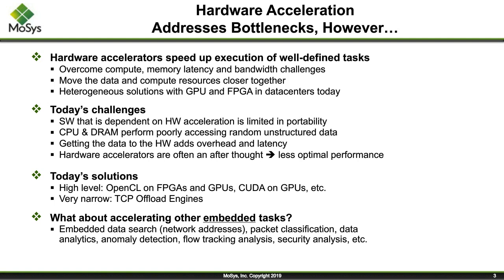Looking at how today's solutions are accelerated at the data center level: we see solutions with OpenCL built upon FPGAs for workload acceleration, and GPUs with CUDA for accelerating things like image recognition — those are very broad, high-level approaches. There's also narrow-type acceleration, such as TCP offload engines, which increase throughput, reduce latency of packets coming in over TCP, and handle that in hardware.